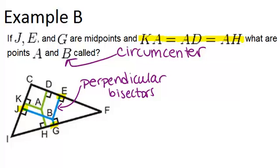So that means all three of these segments are the same length. Because they're all the same length, it means that point A must be the incenter of the triangle because the incenter is the point that's equidistant from all three sides of the triangle.